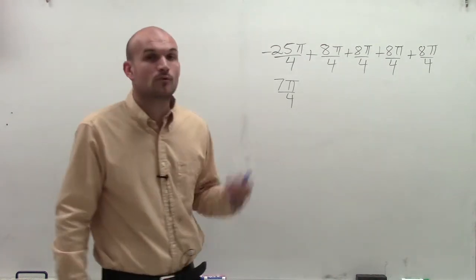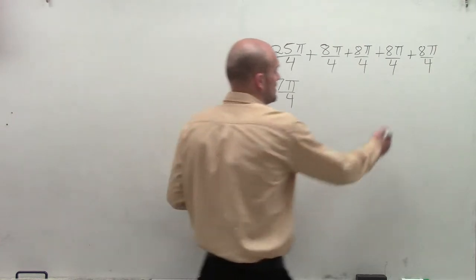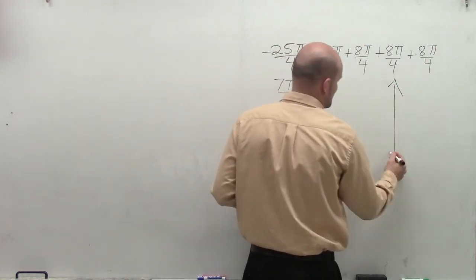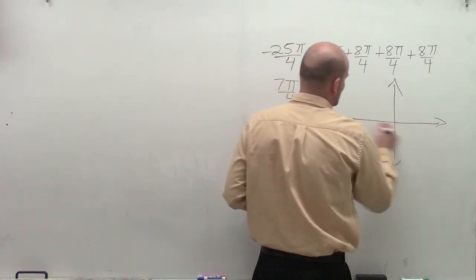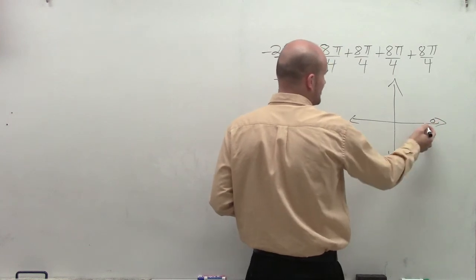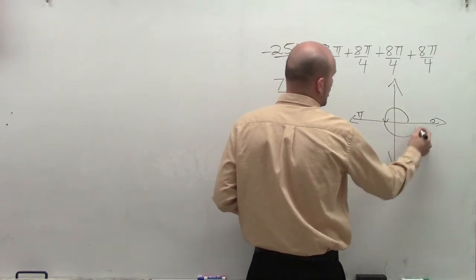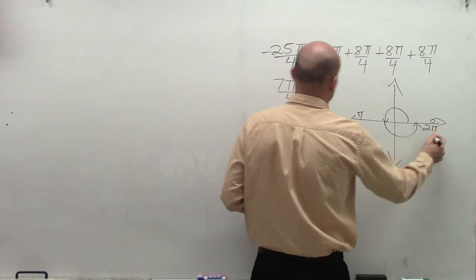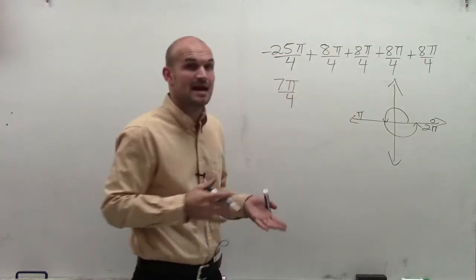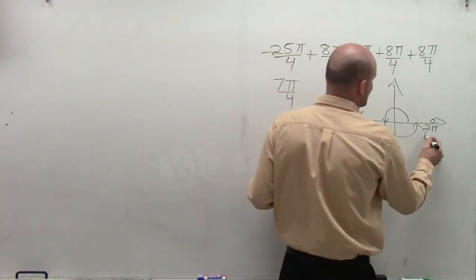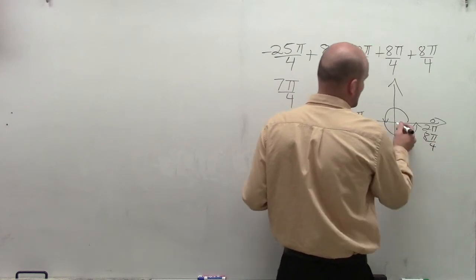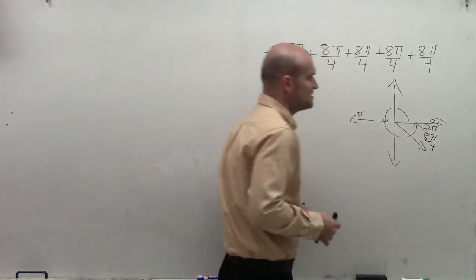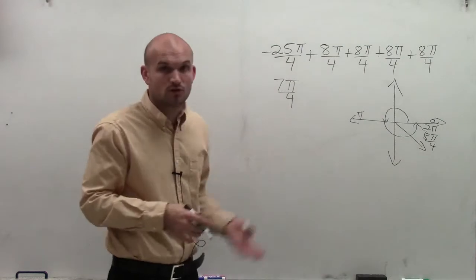I do need to understand where 7 pi over 4 is. Without going into a long description, what we know is, if I start my angle here at 0, halfway around the circle is pi. Remember, all the way around is 2 pi. But since I'm dealing with an angle with denominator of 4, I can represent this as 8 pi over 4. So I know 7 pi over 4 is going to be somewhere in this fourth quadrant.